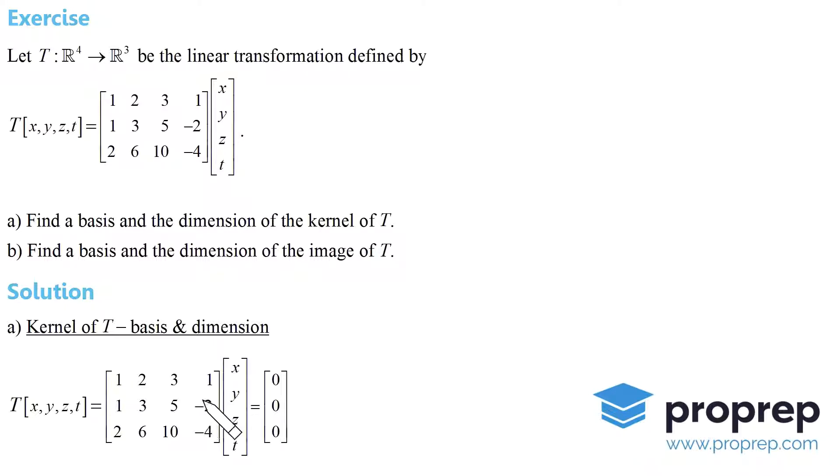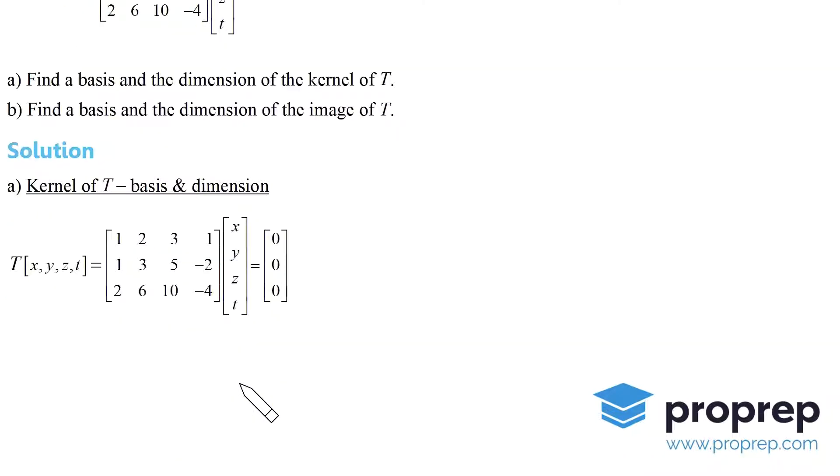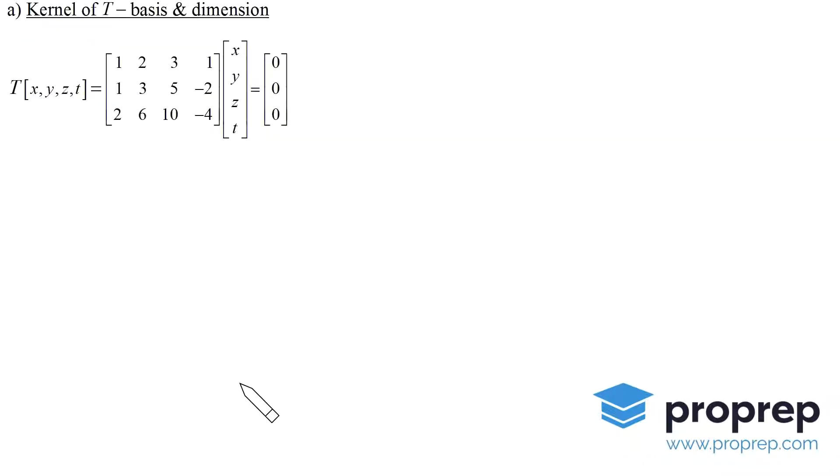This is a homogeneous system of linear equations: three equations, four unknowns. We want to bring the matrix to row echelon form. We'll start by getting zeros here, so we'll subtract the first row from the second row and twice the first row from the third row, as specified here.